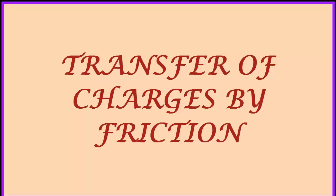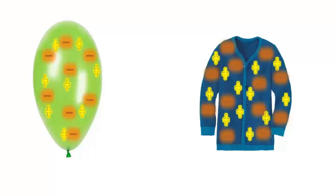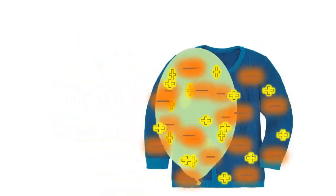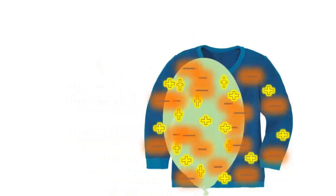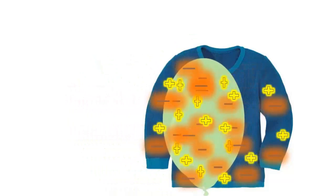Transfer of charges by friction. This balloon and this shirt are neutral as they have equal numbers of protons and electrons. The balloon is made to rub on the shirt, then electrons in the shirt get transferred to the balloon.